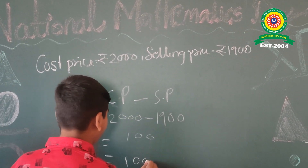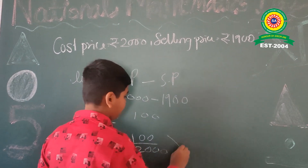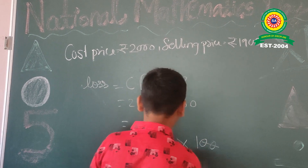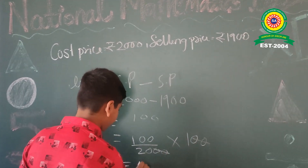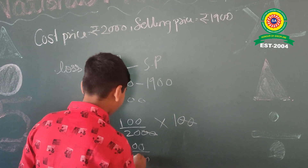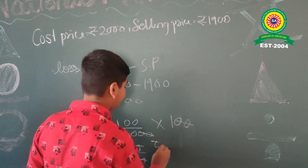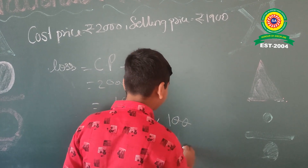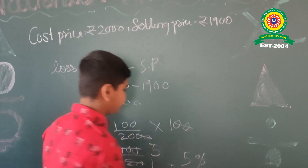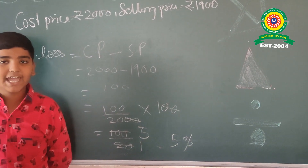Loss percent equals 100 upon 2000, multiplied by 100. Here is a cancellation: 100 upon 20. That gives 5 upon 20. The loss percent is 5 percent. Thank you.